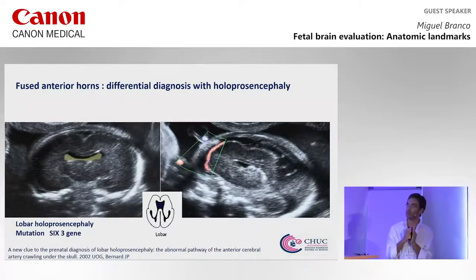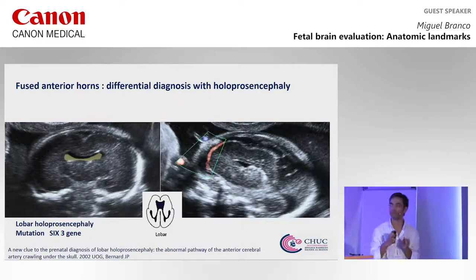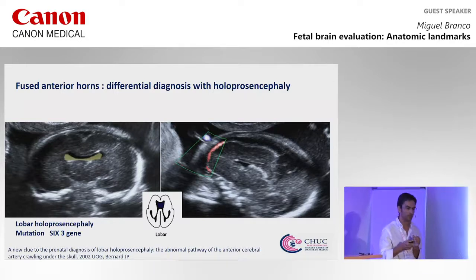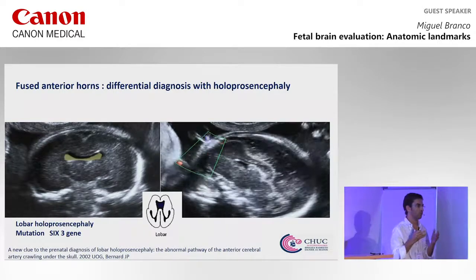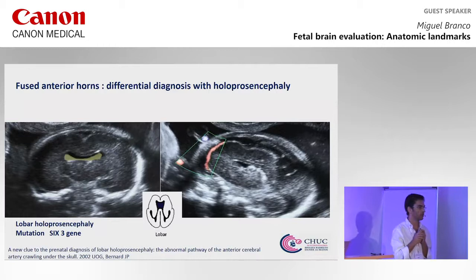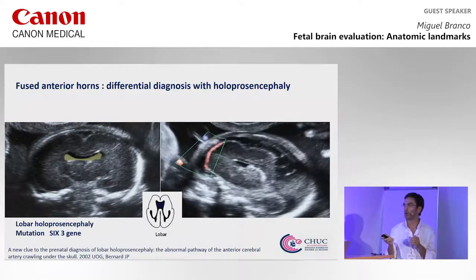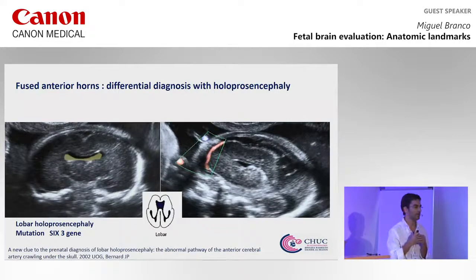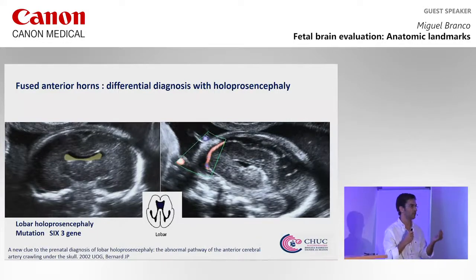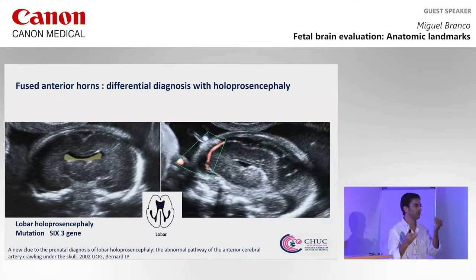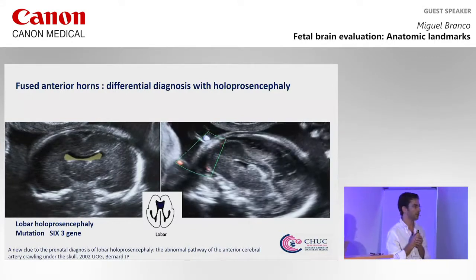Another differential diagnosis for fused anterior horns is lobar holoprosencephaly. In this situation we have no normal corpus callosum and incomplete interhemispheric fissure. On the right we have a typical sign where the cerebral artery runs under the skull, because the interhemispheric fissure is incomplete on the anterior portion.